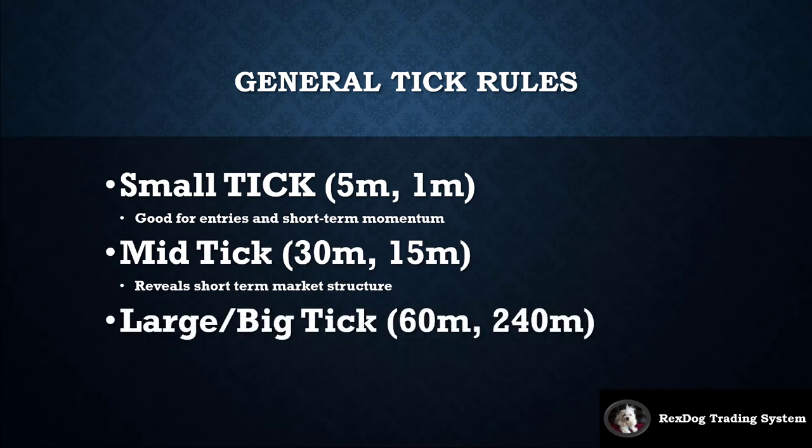Then you have the larger big tick, more relatable to the 60-minute and 240-minute time frame. This shows long-term market structure and zones. A lot of times in live trading, a trade that doesn't seem to make sense is actually based on where price is within the large or big tick zones. These are big market structure areas. When price gets into those zones, it provides good opportunities for fades — quick reactions at those levels, similar to how price reacts at a previous day high.